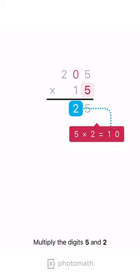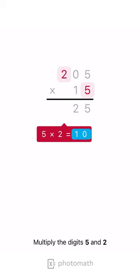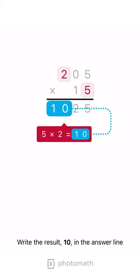Multiply the digits 5 and 2. Write the result, 10, in the answer line.